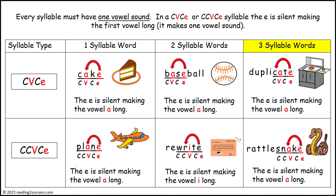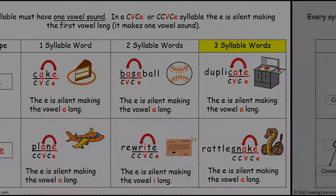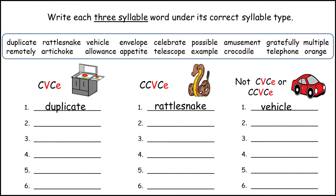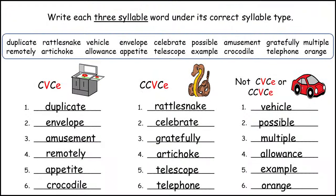Now have kids practice three-syllable words that have the CVC silent E syllable, as in duplicate, and the CCVC silent E syllable, as in rattlesnake. Have kids write each three-syllable word under its correct syllable type; column three is for words that do not fit the CVC silent E or CCVC silent E syllables. This is the completed practice page.